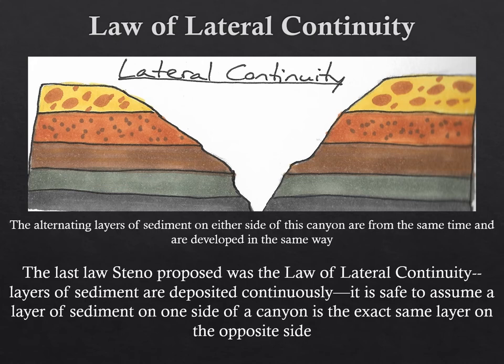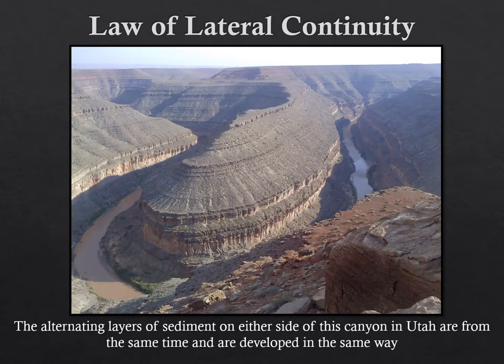Another example of this is through an actual canyon from Utah. The law of lateral continuity is operating here — you can look at one of these sandstone layers on one side of the canyon, and it's going to be the exact same layer on the opposite side. It's just been eroded away by the river flowing through the landscape. That's the law of lateral continuity.